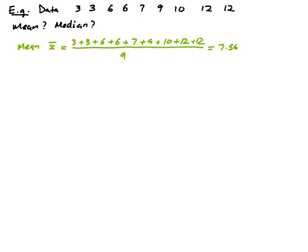Now let's find the median. I have 3, 3, 6, 6, 7, 9, 10, 12, and 12. I want to remove the outermost values until I end up with 1 or 2 values in the middle. So I remove 3 and 12, then 3 and 12 again, then 6 and 10, then 6 and 9. Now I end up with 1 value in the middle, which is 7. So the median is 7.